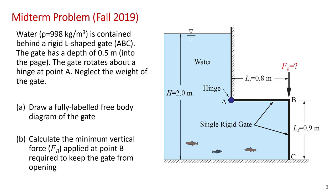This is the problem statement taken from fall 2019 midterm. Water at 998 kilograms per cubic meter is contained behind a rigid L-shaped gate ABC. The gate has a depth of half a meter into the page and the gate rotates about a hinge at point A. You're told in the problem statement to neglect the weight of the gate. So we're only considering hydrostatic forces.